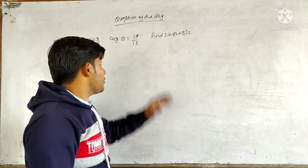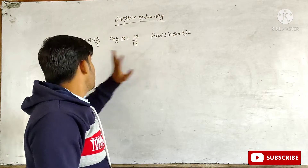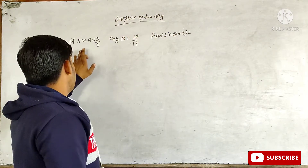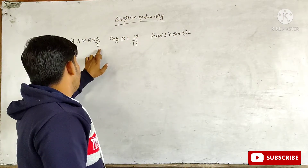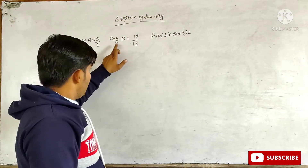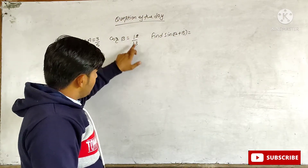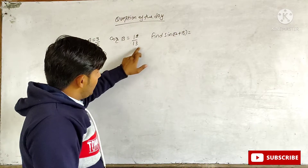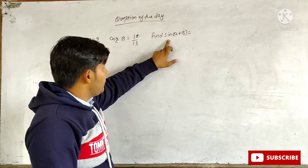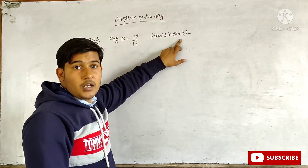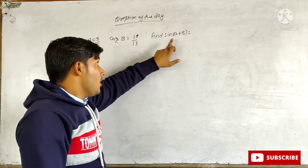Hey guys, the question of the day is: if sin A equals 3/5 and cos B equals 12/13, we have to find the value of sin(A + B).